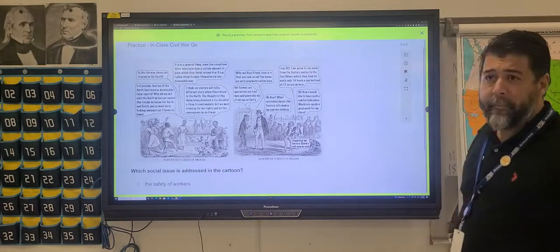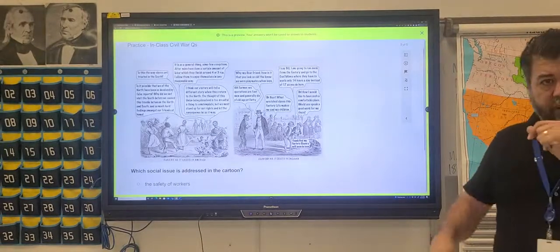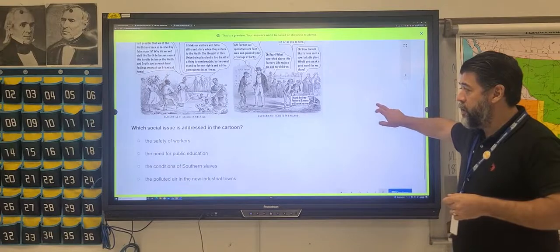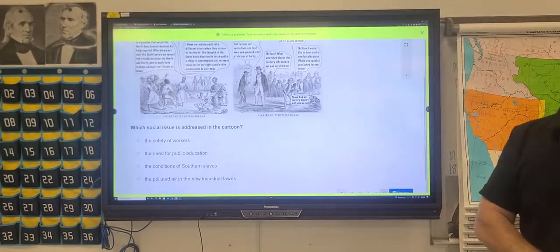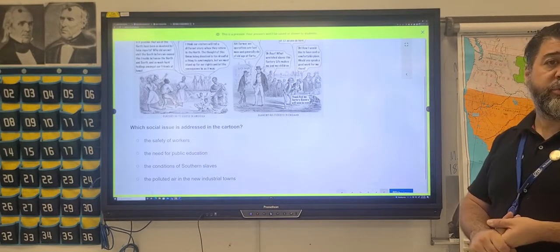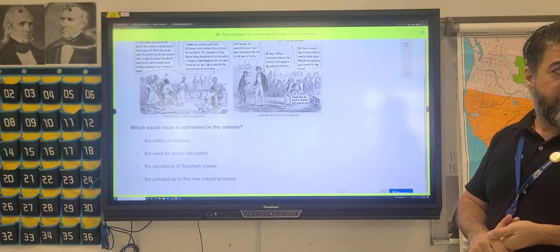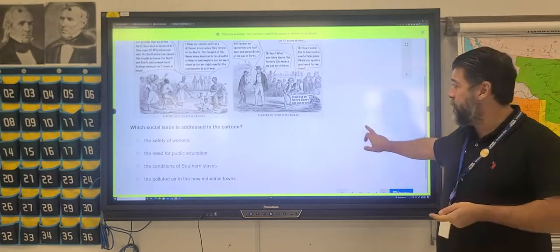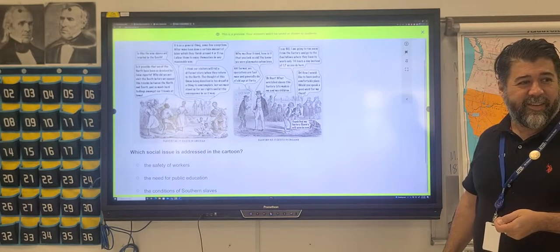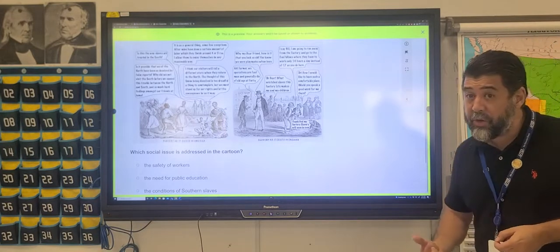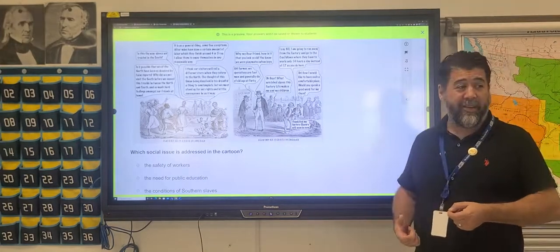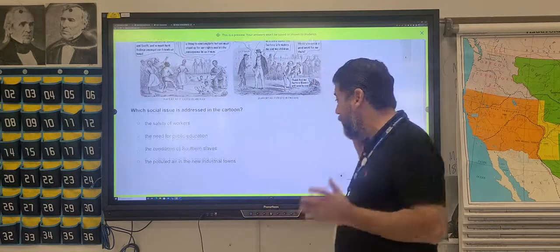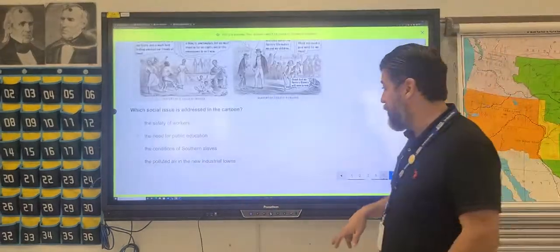How about this one? Here we got a cartoon, a lot of talking in the cartoon. There's also some captions. Let me give you the options. What social issue is addressed in this cartoon? The safety of workers, the need for public education, the conditions of southern slaves, or the polluted air in the new industrial towns? What? And what leads you to that answer? Well, have you actually read it? Do you know that's what they're talking about? Do I have to read it? No, you can just look at the image, you look at the caption of both images. What do they have in common? Slavery. They're both discussing slavery, right? So I mean, we don't even read all that. This is talking about slavery. This is talking about slavery. The only one of those four options that's talking about slavery is what? C. So it seems like an easy one to me.